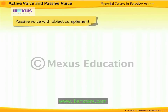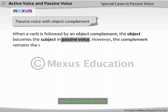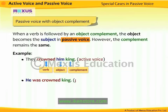Passive voice with object complement: when a verb is followed by an object complement, the object becomes the subject in passive voice, but the complement remains the same. For example, 'They crowned him king' becomes 'He was crowned king.' The object 'him' becomes the subject, but the complement 'king' remains the same.